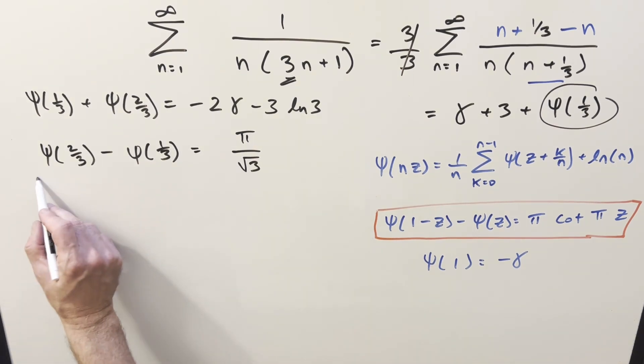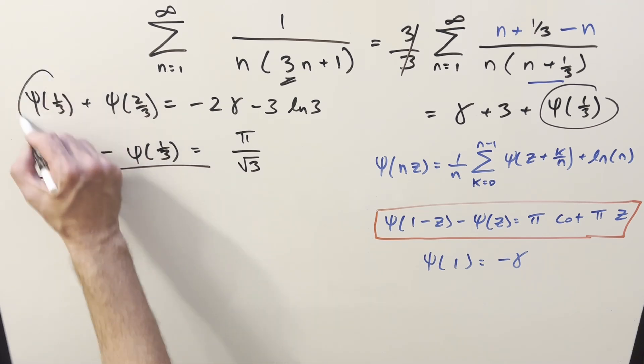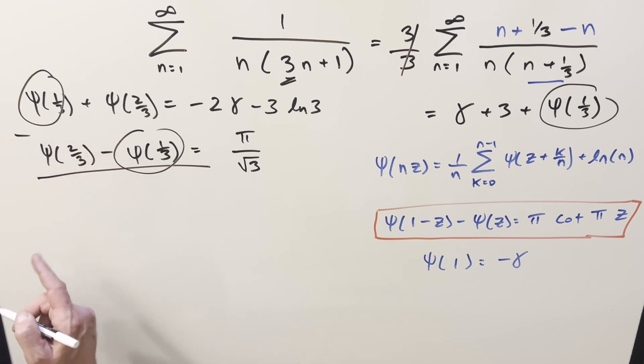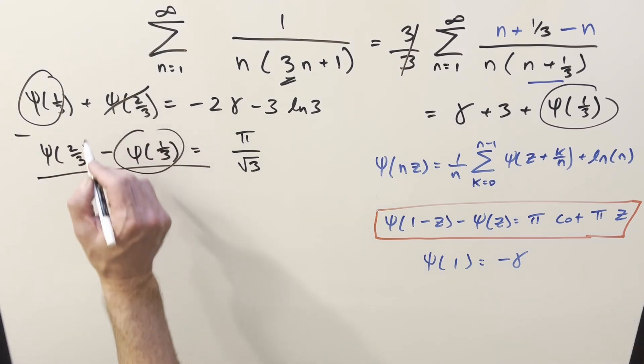Usually what I want to do is add these together. The only problem is if we do that, our goal, the 1 third part is going to cancel. So what I'll do instead is subtract these two equations. That way, the 2 third part that we don't care about goes away.